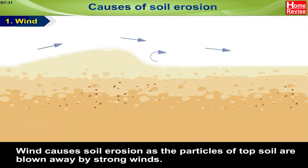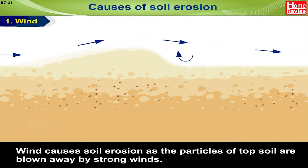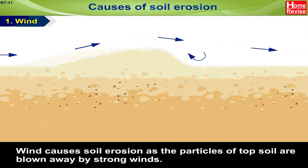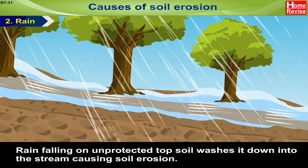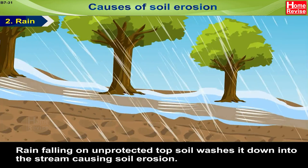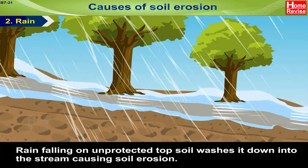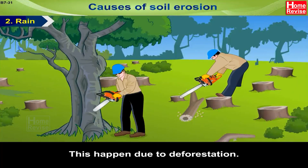Causes of soil erosion. Wind: wind causes soil erosion as the particles of topsoil are blown away by strong winds. Rain: rain falling on unprotected topsoil washes it down into the stream, causing soil erosion. This happens due to deforestation.